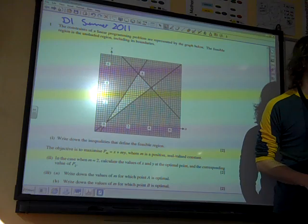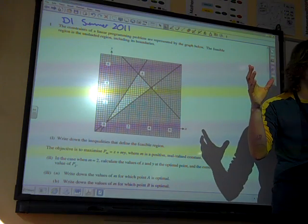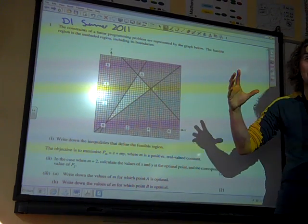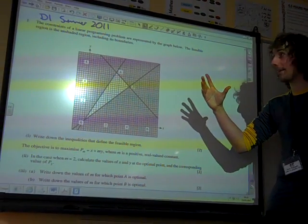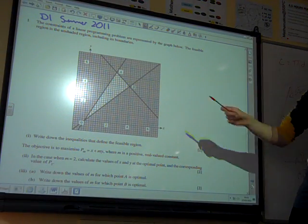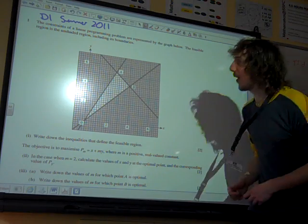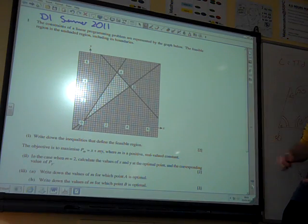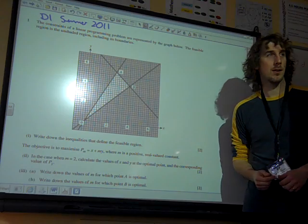This is D1 Summer 2011, one of those graphical questions where they give you the graph. What are you doing then? You have to work out the constraints and go from there. The constraints of a linear programming problem are represented by the graph below. The feasible region is the unshaded region, including its boundaries.